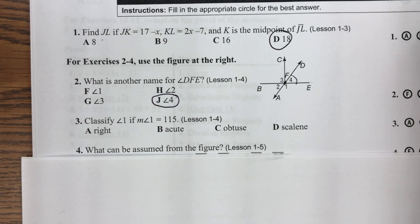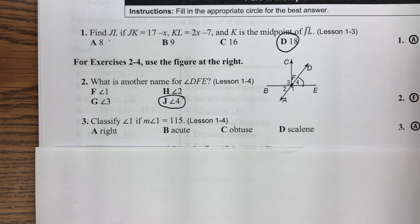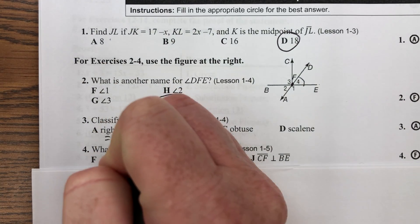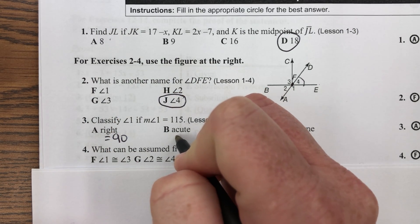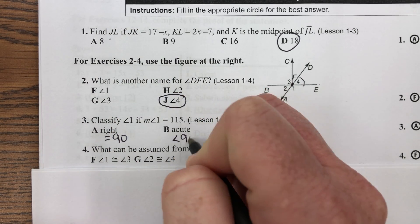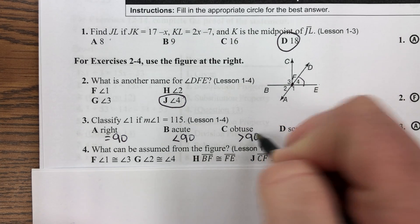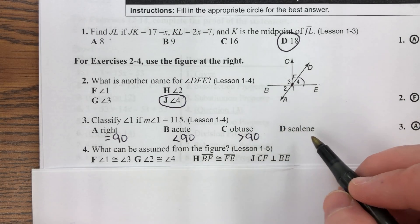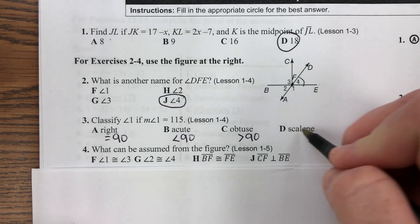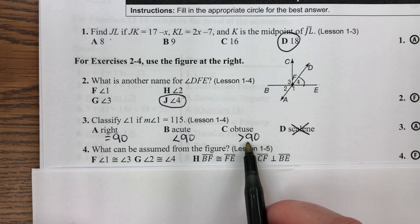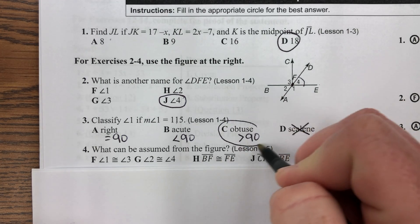Number three. Classify angle 1 if the measure of angle 1 is 115 degrees. So remember, a right angle is equal to exactly 90. An acute angle is less than 90. And an obtuse angle is greater than 90. There's no such thing as a scalene angle. That's just talking about a type of triangle, so that doesn't even work. So our angle is 115. That's greater than 90. So ours is obtuse.